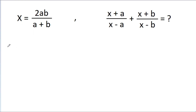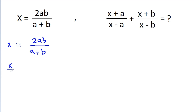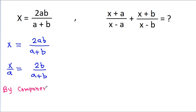We have given that x is equal to 2ab by a plus b. Now, instead of directly substituting the value of x, from x plus a by x minus a we can get x by a is equal to 2b by a plus b, and we will use componendo and dividendo.